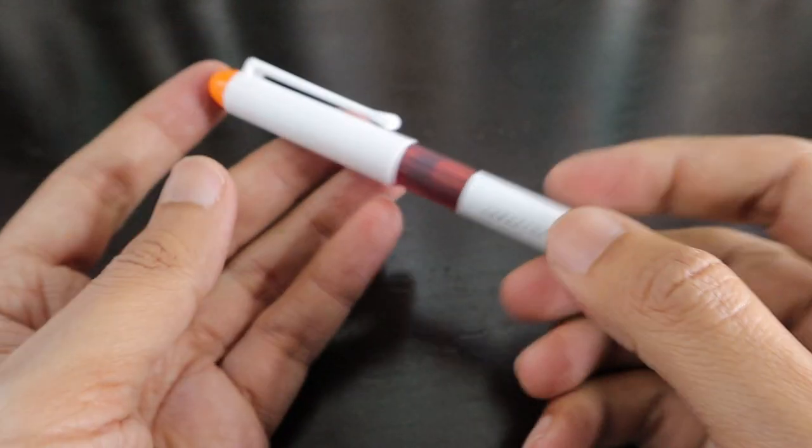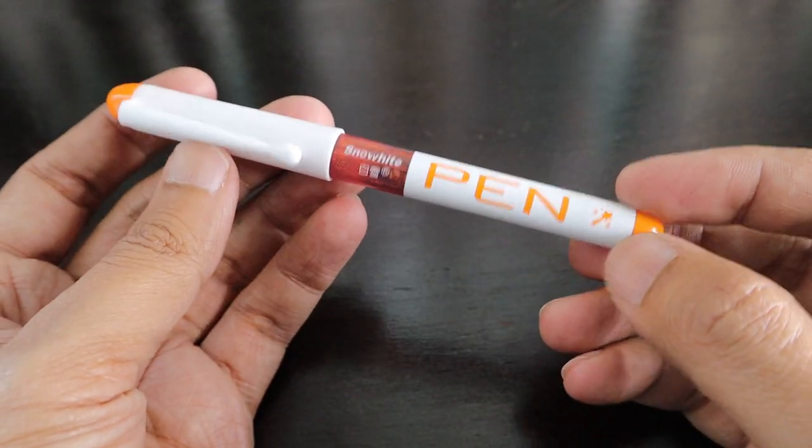EF is written on the fountain pen nib and this is the whole plastic body. The whole thing is around 10-15 grams.